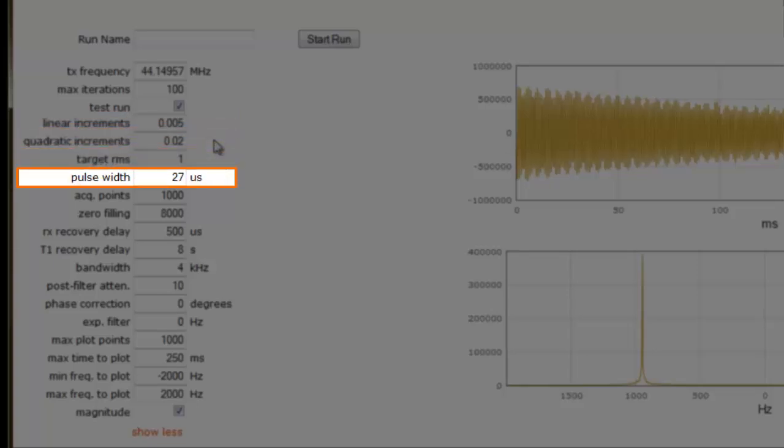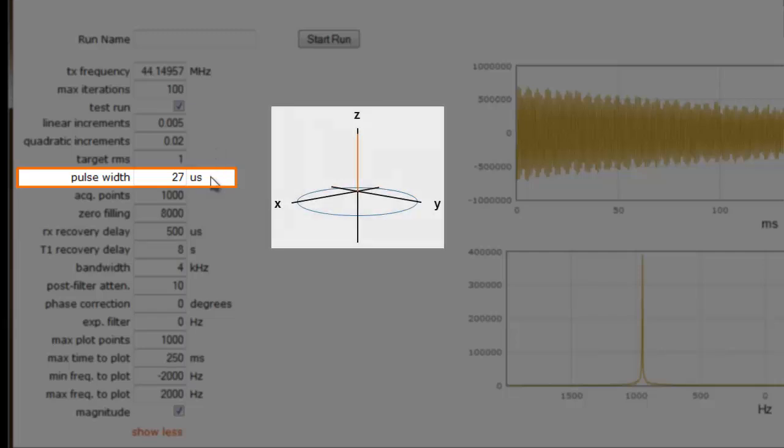The next important parameter for shimming is the pulse width. The pulse width is the length of time the transmitter is turned on in order to produce a 90 degree tip angle. The 90 degree pulse width value is measured in microseconds, and varies from instrument to instrument.